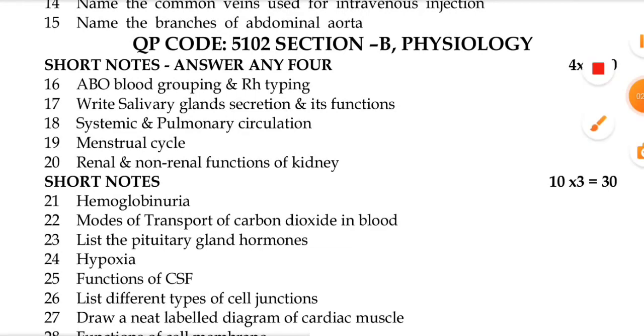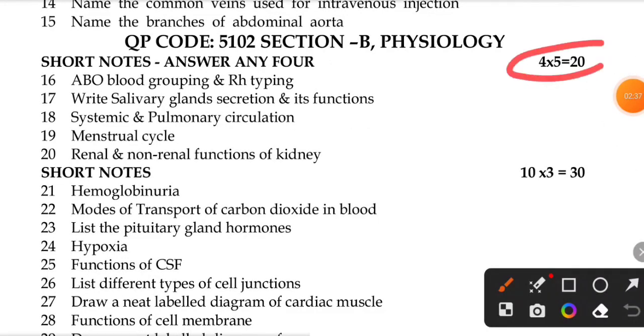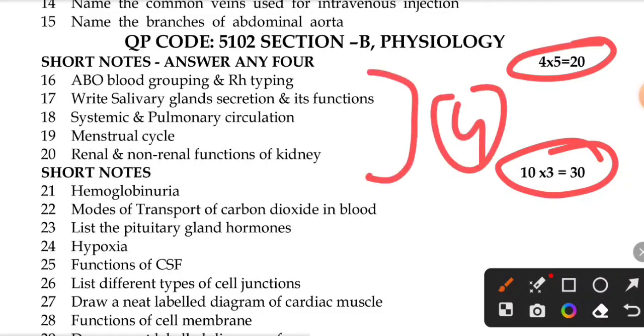In physiology, there are 50 marks. Short answers include: ABO blood grouping and RH typing, salivary gland secretion and its functions, systemic and pulmonary circulation, menstrual cycle, renal and non-renal functions of the kidney.